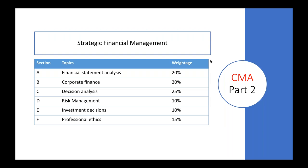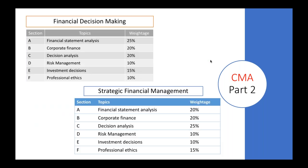This has now been changed to Strategic Financial Management. If you observe the topics and sections, there's not much change in the sections or topics themselves. As compared to CMA Part One, we do not have significant changes in CMA Part Two. We still have six sections, and the main differences are in the weightages.